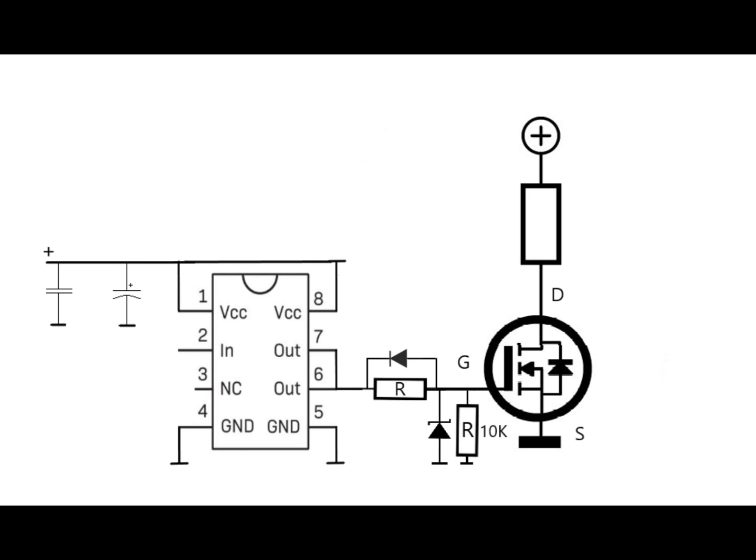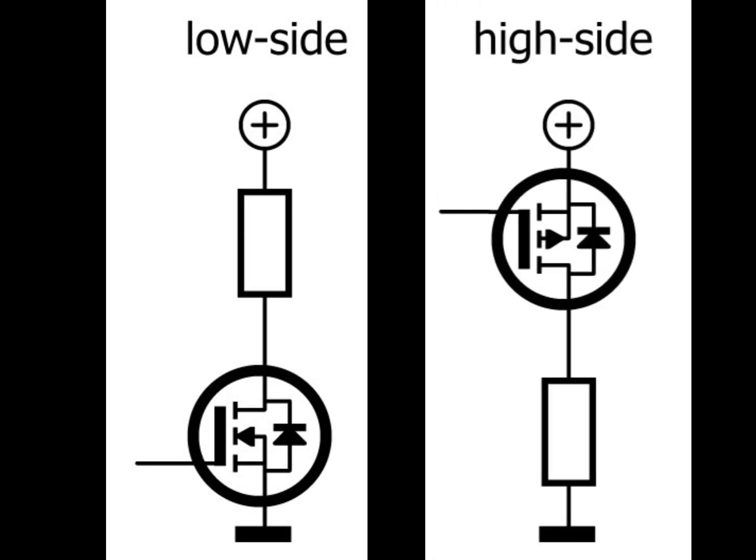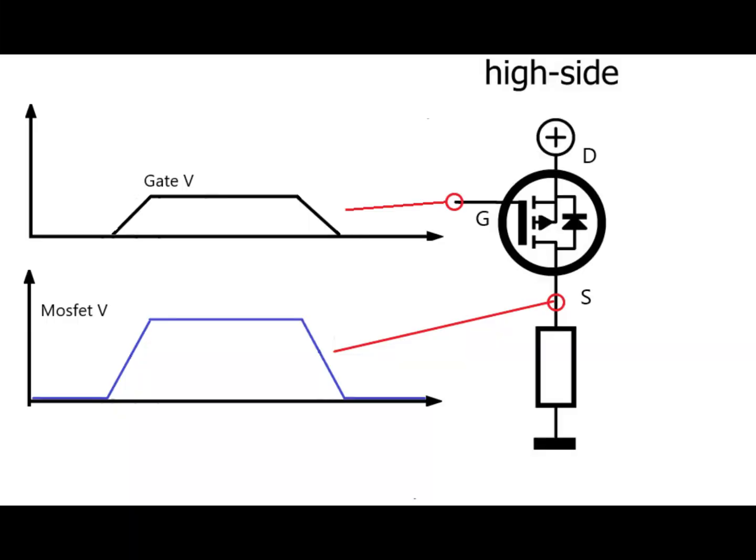Now all of this works fine, but there arises a problem when we want to drive a high side MOSFET or IGBT. A low side switch is one where the switch is below the load, and a high side switch is one where the switch is above the load. The problem is that when we open a high side switch onto a load, the voltage on the load goes to the supply voltage, and to keep the switch open at this point the voltage at the gate needs to be 5 to 20 volts above the supply voltage, which is a problem.